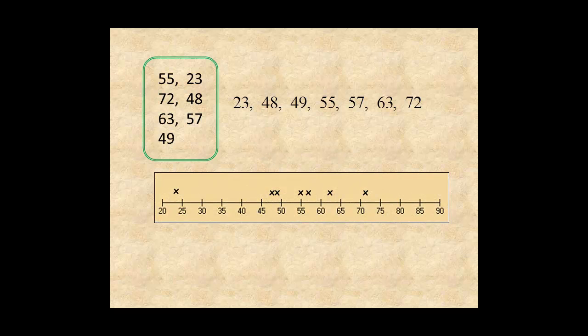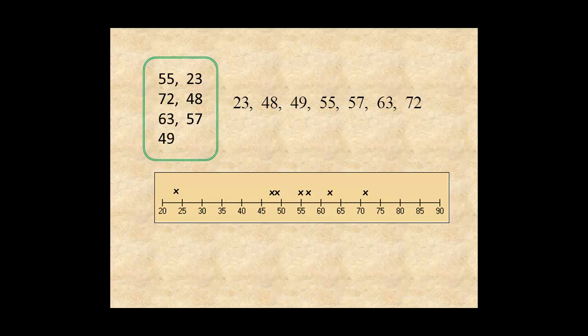A graph is much better. It's pretty easy to see that 23 is probably an outlier.